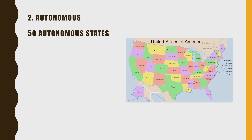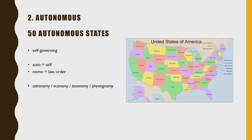Autonomous — the 50 autonomous states. The 50 autonomous states of the United States are self-governing states, with the root 'auto' meaning self, and 'nom' meaning law and order. These are important roots — please write them down and memorize them. 'Auto' relates to self, like automatic. 'Nom' is about law and order, seen in words like astronomy, economy, taxonomy, and physiognomy — all academic words about the arrangement of things.